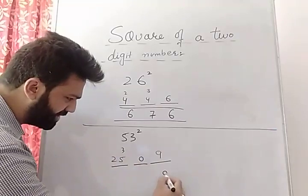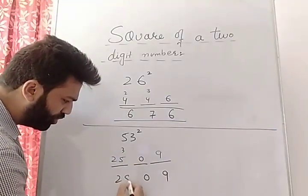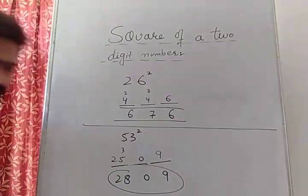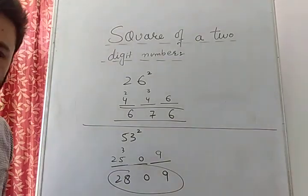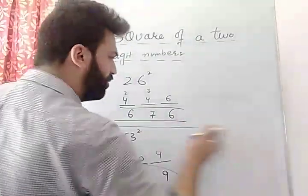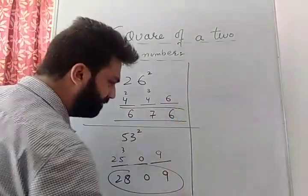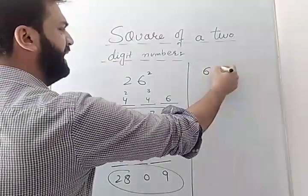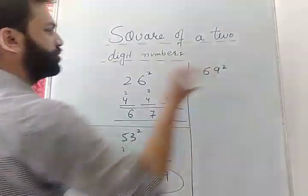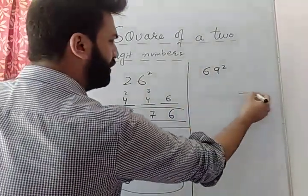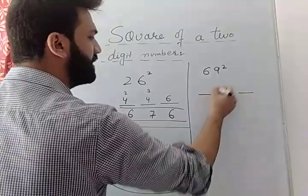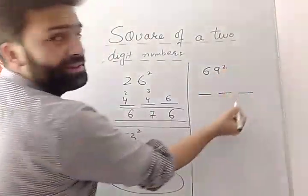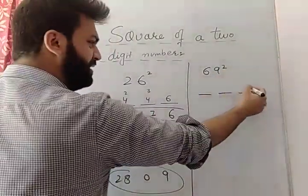The answer is 2809. This is really amazing! Let's make more examples. 69 squared — no problem at all. Three spaces. What is 9 squared? 9 squared is 81 — keep 1, carry 8.